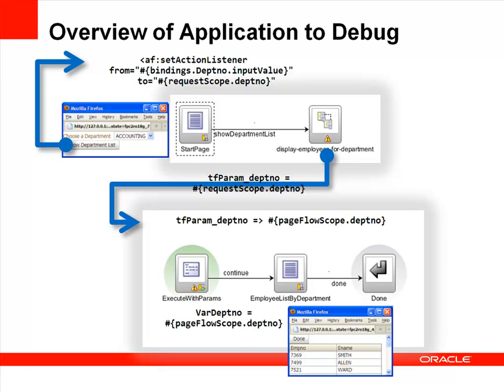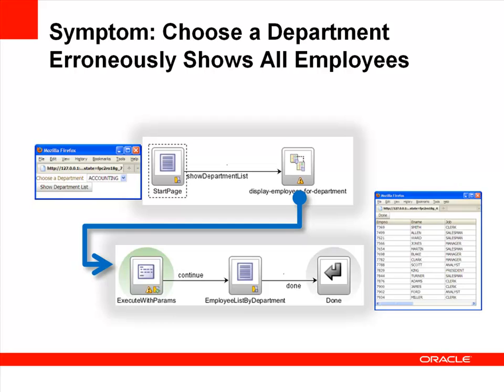Here's another example of an application to debug. In this case, a setActionListener is called when a button is pressed, setting the value of a department number. That department number is passed to a taskflow parameter, and the nested taskflow uses the department number as a bind variable to filter the employee's query by department. The issue is that a specific department is selected in the start page, but all employees are displayed instead of only employees for the selected department.